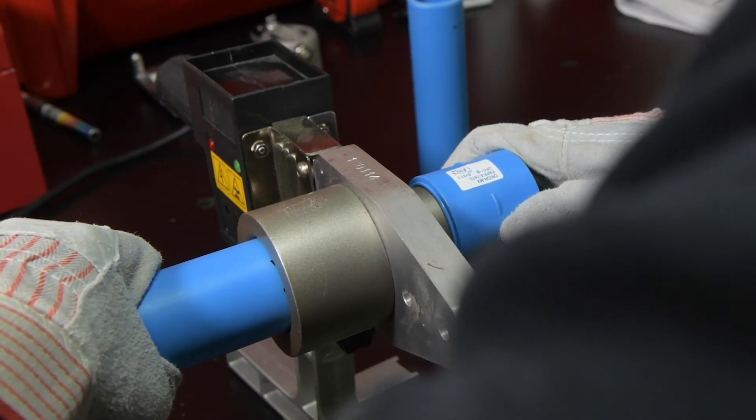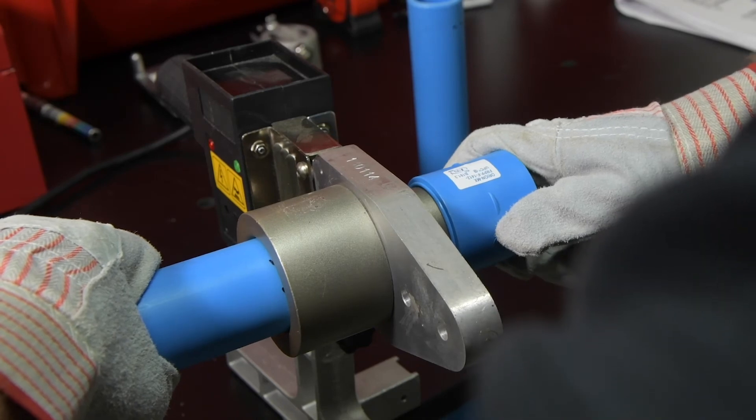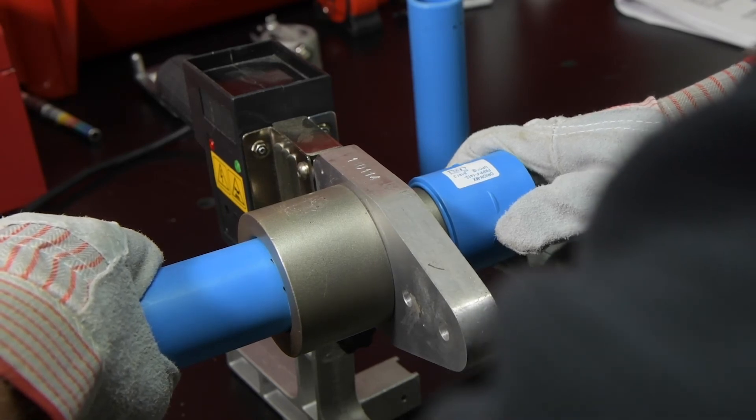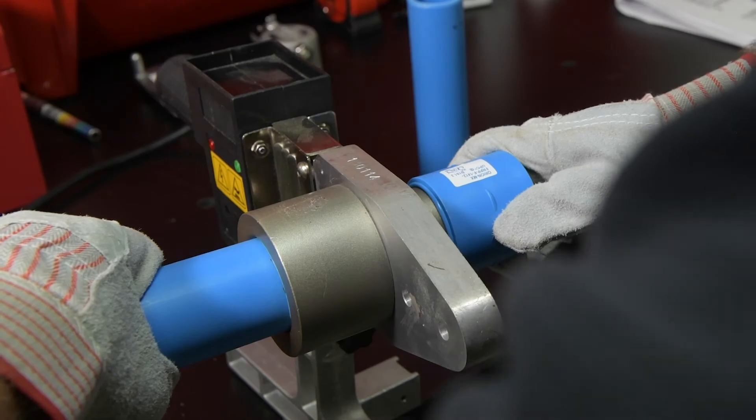Keep both pipe and fitting perfectly straight on the tool as they're heating. Letting them sag downwards or pulling them towards you will deform the connecting surfaces, which can result in a poor fusion.